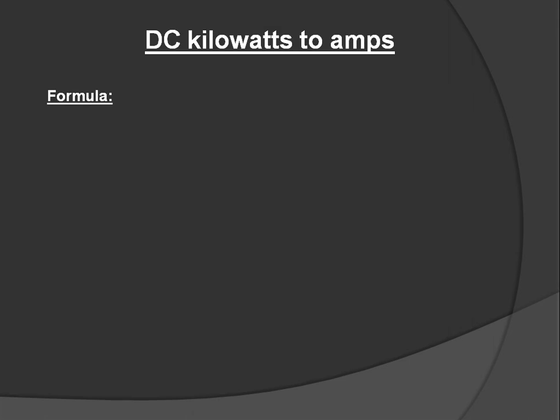The third one is kilowatts to amperes in DC. The formula is I equals 1000 multiplied by P, divided by V.